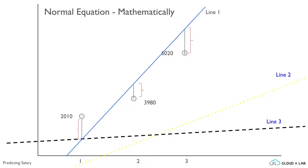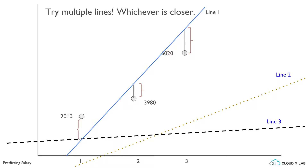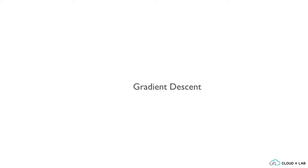So our machine learning algorithm needs to come up with a line which has the minimum error. Here, each line is basically a model. The model or line that the algorithm comes up with will be used for predictions. We could create a simple algorithm that iterates over all possible lines and keeps the best line so far. Such an algorithm will basically try lines with all possible slopes and distances from the center. The challenge with this approach is that it will take a huge amount of time to come up with the best model. Why not try to go to the side where the error is reducing? One such approach is gradient descent.